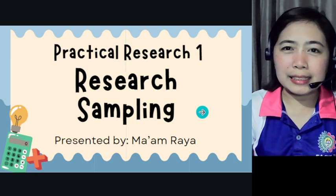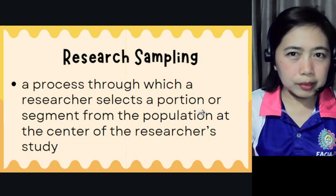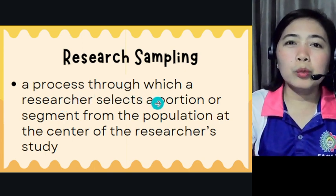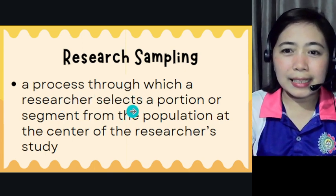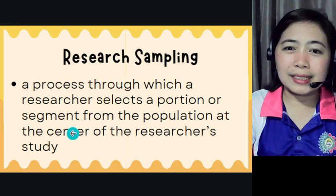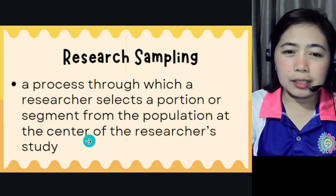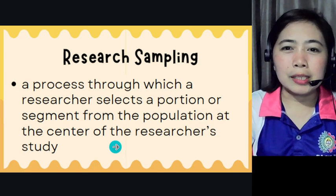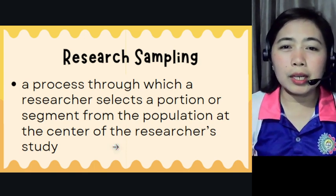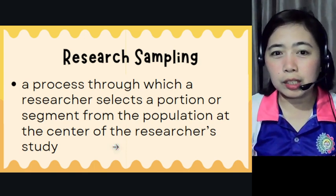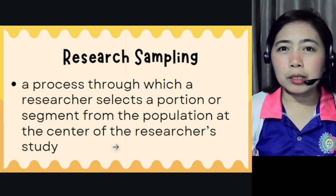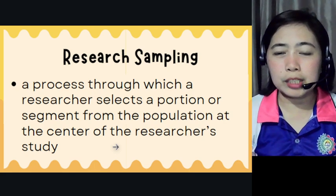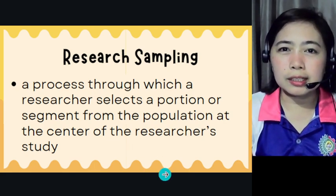For research sampling, we're going to define it first. It is a process through which a researcher selects a portion or segment from the population that's at the center of the researcher's study. When we say sampling, it is a process where the researcher takes only a portion from the population of the study being conducted.